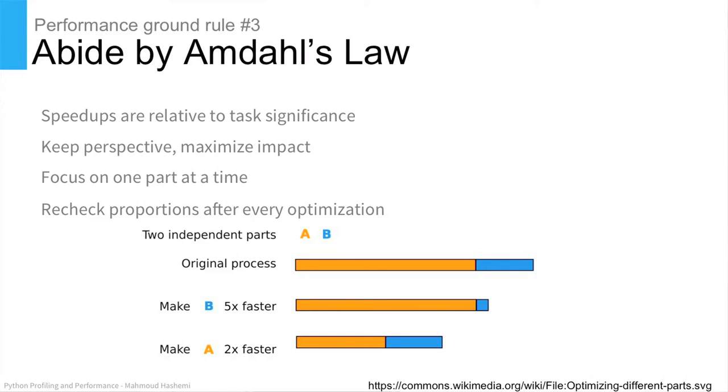Finally, number three — our buddy Amdahl. Amdahl is a person, and he has a law. Basically, speed-ups are relative to task significance. You have to keep perspective. You have to focus on one part at a time. With optimization, you often end up changing one thing at a time. If process A takes much longer than process B, making B five times faster doesn't shorten the whole process as much as making A two times faster. In service-oriented applications, the CPU-bound hard things are very frequently cryptography, serialization, and compression — those are the things that eat up your CPU and that we very frequently end up optimizing at PayPal.